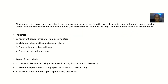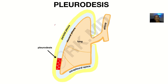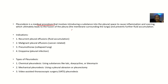Pleurodesis is a medical procedure that involves introducing a substance into the pleural space or pleural cavity. This substance causes inflammation and scarring, which blocks the pleural space so that fluid will no longer have space to accumulate.